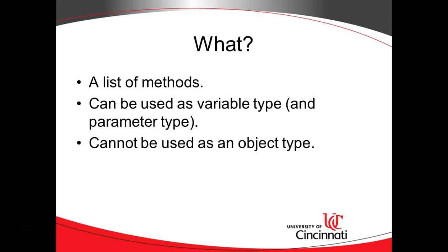As a variable type, remember our classification of variables. We have attributes and instance fields, local variables, and parameter variables. That last one, parameter variable, is something that you pass into a method. So what we're saying here is an interface can be used as a type of data or a type of object that you pass into a method, and that becomes very powerful.